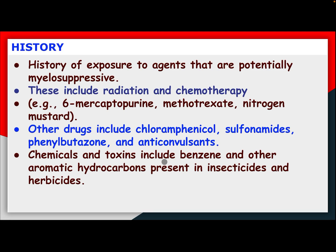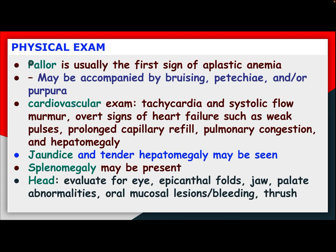Chemicals and toxins include benzene and other aromatic hydrocarbons present in insecticides and herbicides. Physical examination: pallor is usually the first sign of aplastic anemia, may be accompanied by bruising, petechiae, and purpura. Cardiovascular exam may show tachycardia, systolic flow murmur, or overt signs of heart failure such as weak pulses, prolonged capillary refill, pulmonary congestion, and hepatomegaly. Jaundice and tender hepatomegaly may also be seen.